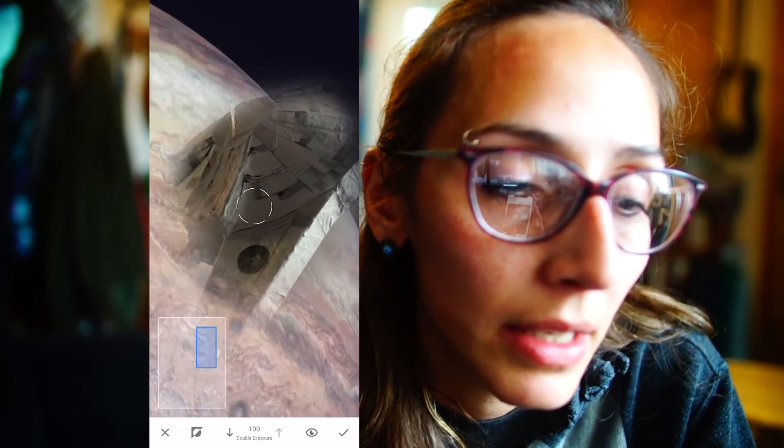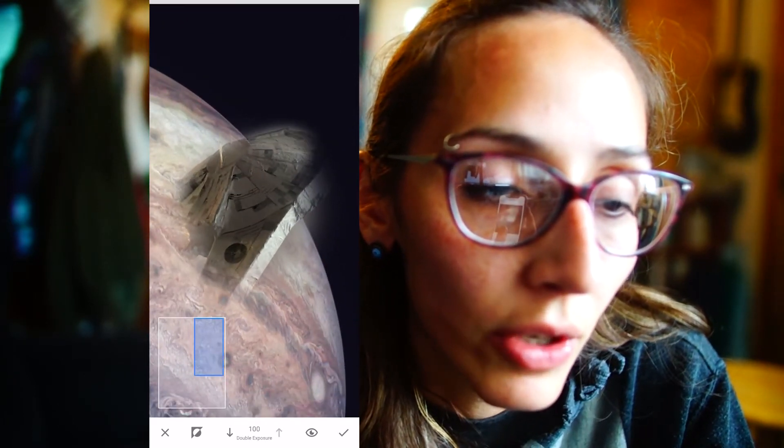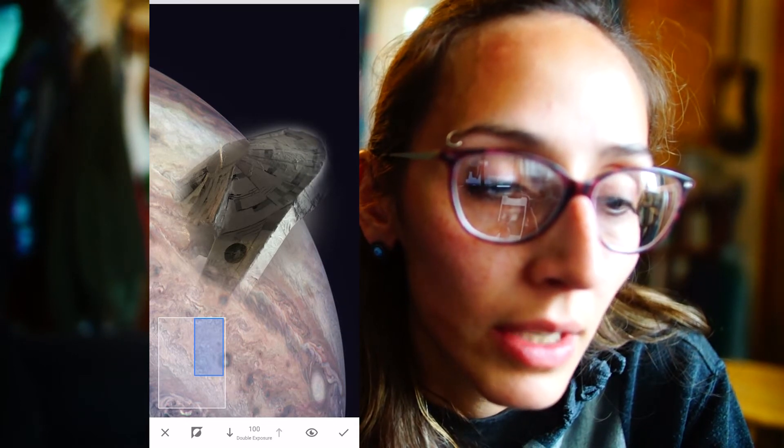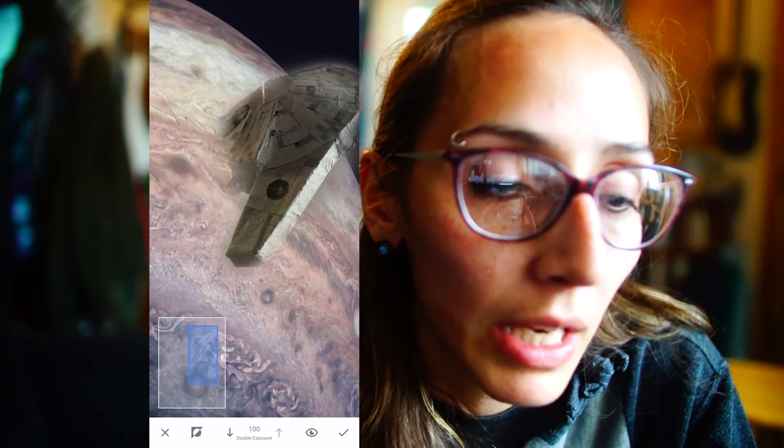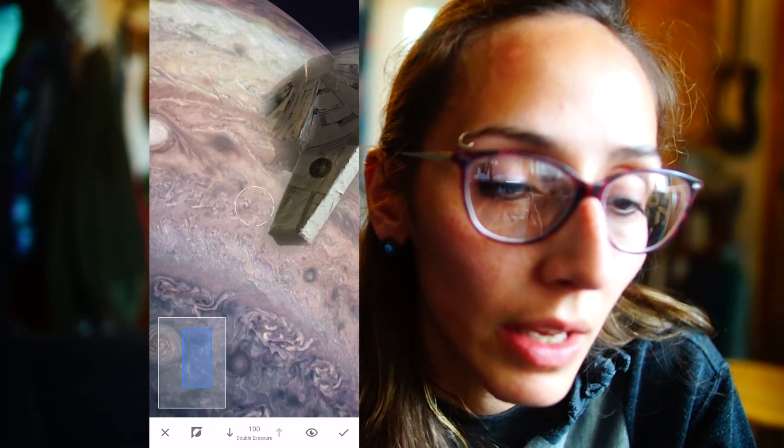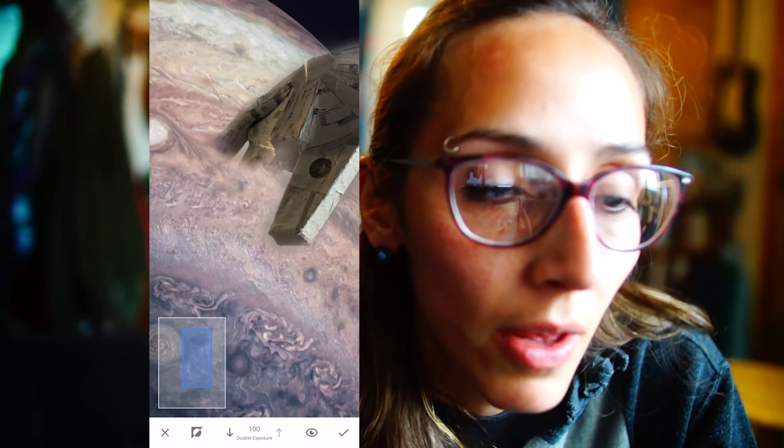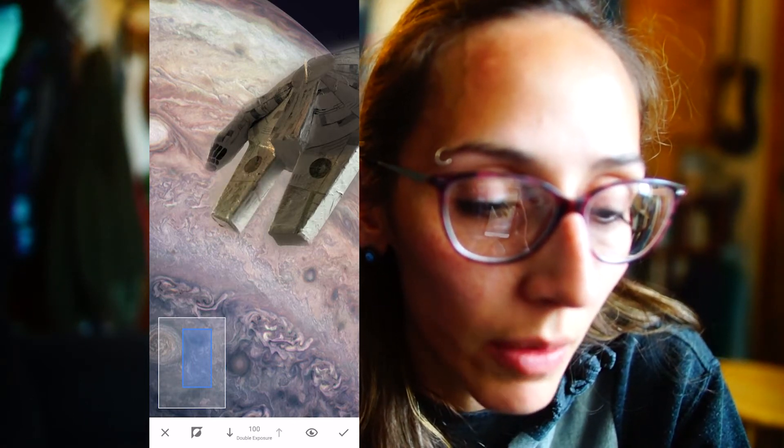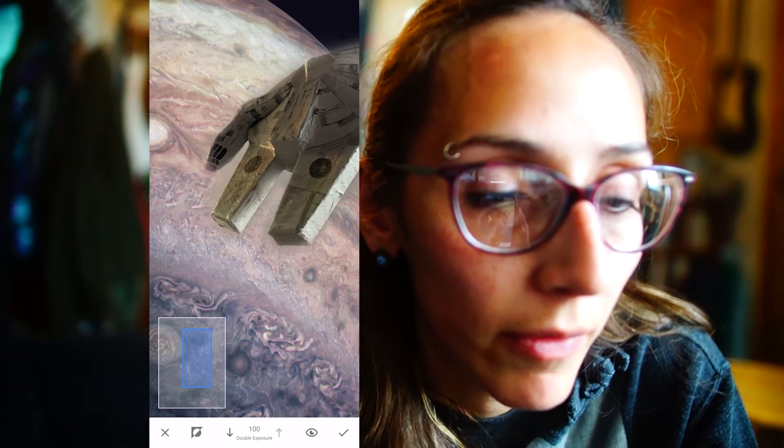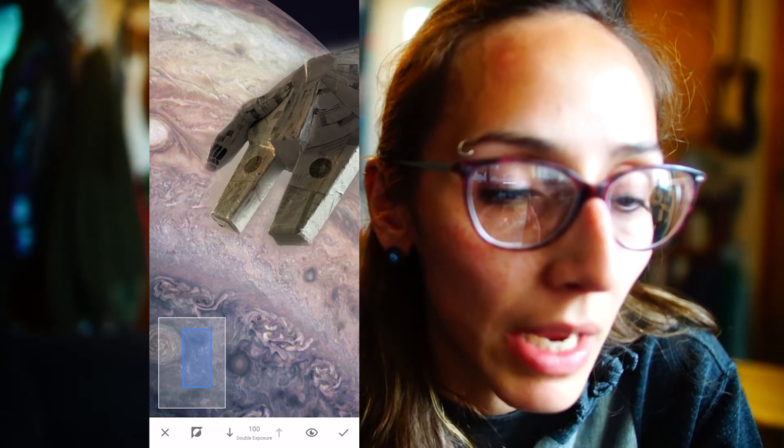So I'm going to start painting here and you should see your top image start to appear on the image that you have as your background or the one you started with. So down at the bottom here you should see 100% exposure. So that means whatever I'm painting is going to be 100% exposed, you should be able to see it 100%.